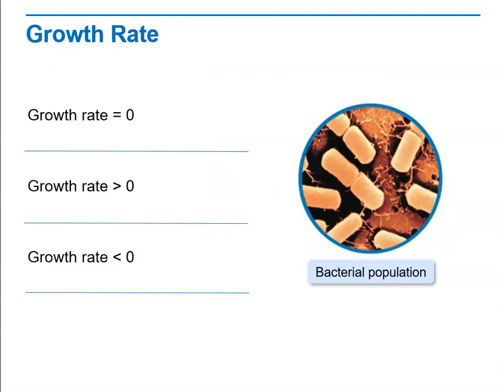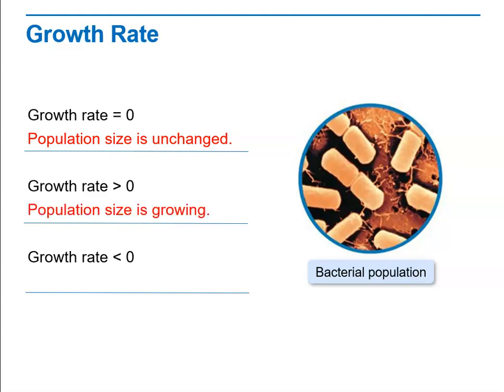A population's growth rate determines whether the size of the population stays the same, increases, or decreases over time. If a population stays more or less the same size, it has a growth rate around zero. A high growth rate means the population is increasing rapidly. If the growth rate is above zero, the population is increasing; if it's well above zero, it's increasing rapidly. If the growth rate is below zero — a negative growth rate — then the population is decreasing in size.